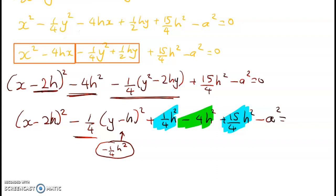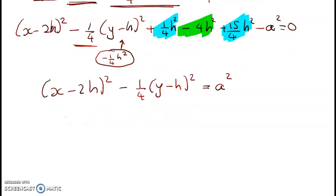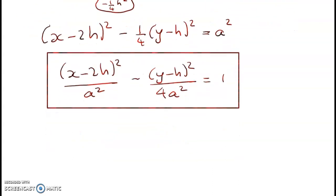Next up is x minus 2h squared minus one quarter of y minus h squared equals a squared. So x minus 2h squared over a squared minus y minus h squared over 4a squared is equal to 1, and this is now in hyperbola form.